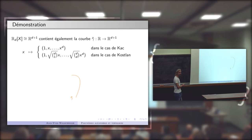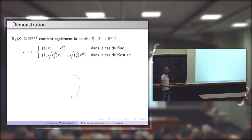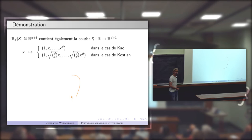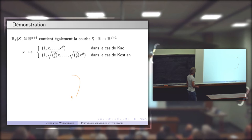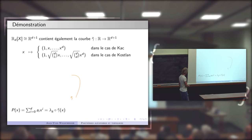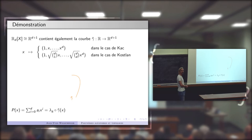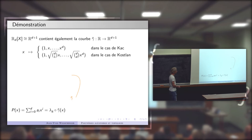Dans le cas de Kac, les coordonnées sont simplement les monômes ; dans le cas de Kostlan, il faut rajouter les coefficients binomiaux. Première observation : la fonction polynomiale P, vue comme fonction sur R, est simplement la composée de la courbe γ̃ dans R^{d+1} avec la forme linéaire produit scalaire avec A. Le polynôme se voit comme composée d'une courbe dans l'espace avec une forme linéaire.